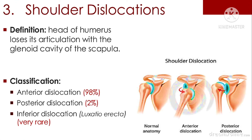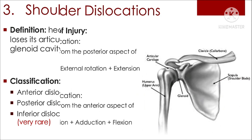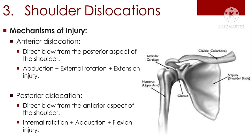Shoulder dislocation occurs when the head of the humerus loses its articulation with the glenoid cavity of the scapula. Classification: anterior dislocation 98%, posterior dislocation 2%, inferior dislocation (luxatio erecta) — very rare.